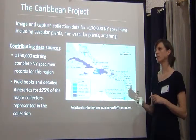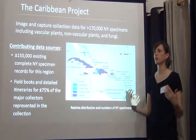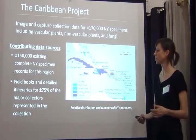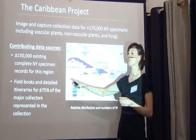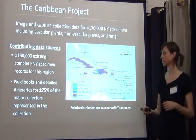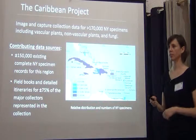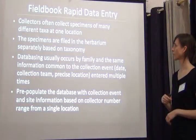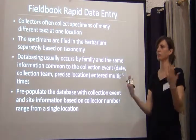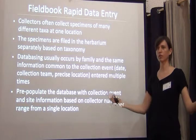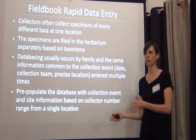We have a Caribbean project going on right now. The Caribbean region is another place where the New York Botanical Garden has done a lot of work, and we have field books for about 75% of the major collectors of our specimens in this region. During the course of this project we're trying to database about 170,000 specimens. Instead of using duplicate records — because we didn't have a partner with a huge Caribbean database — we shifted our data entry to focus on field book data entry.